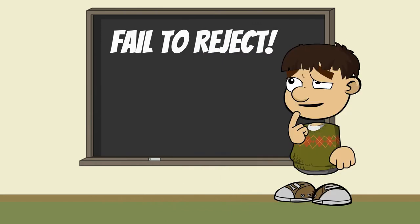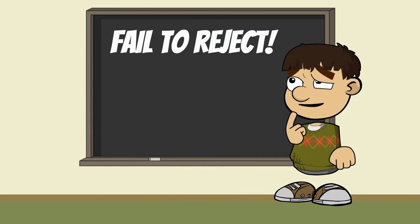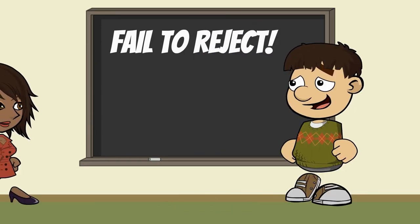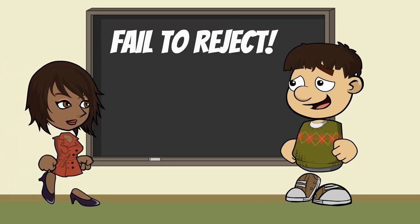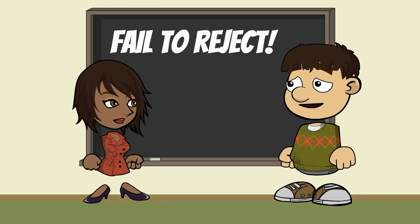Hey, Amy. I need help. Hi, Joey. What's up? I don't understand this fail to reject the null stuff. Why can't I just say I accept the null? And fail to reject is a double negative anyway.